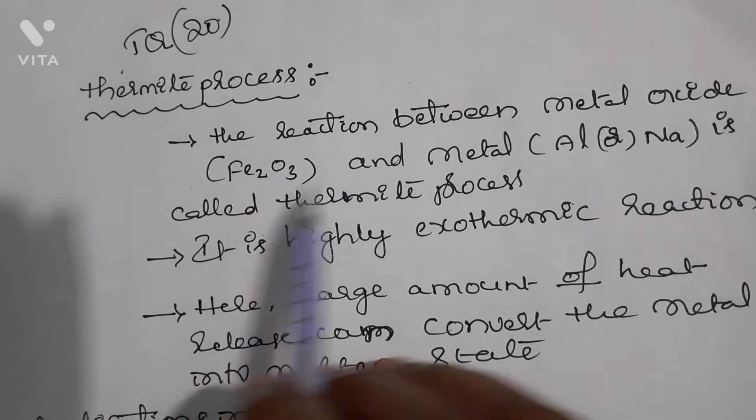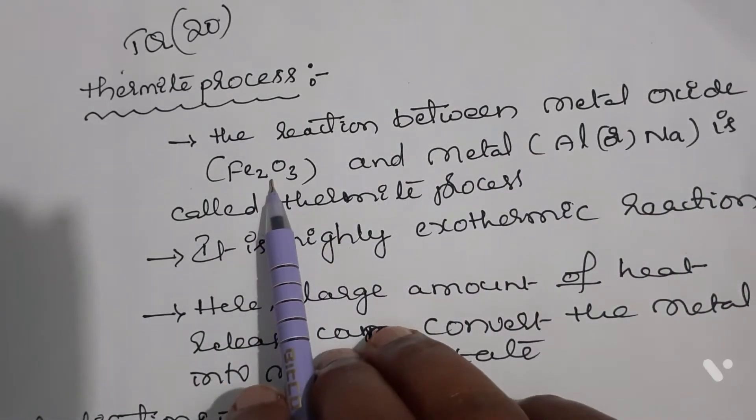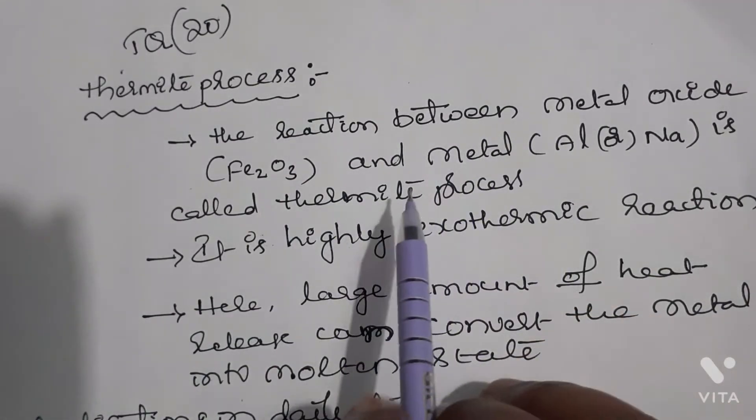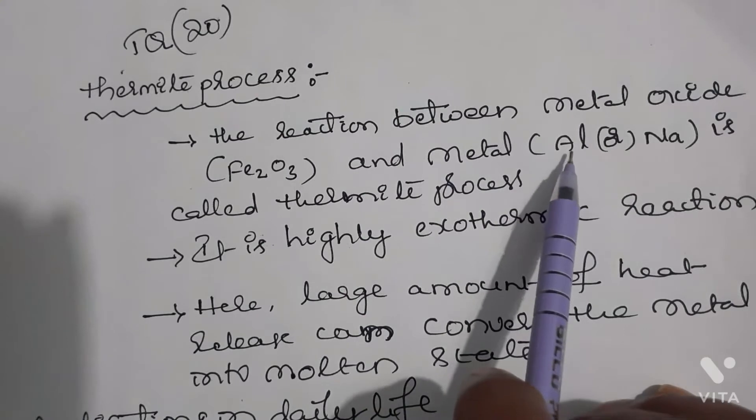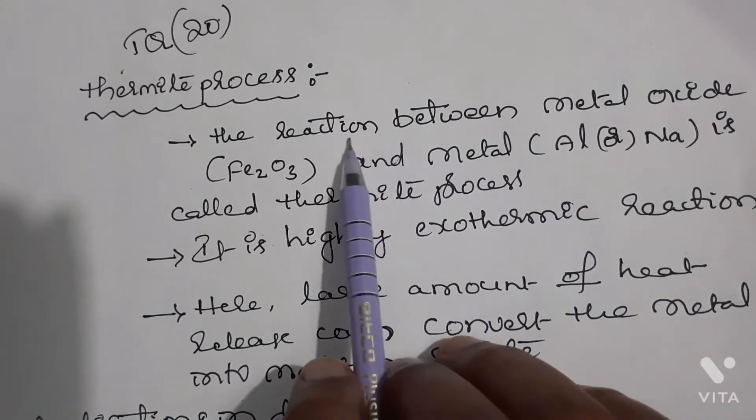What is a thermite process? The reaction between metal oxide, for example Fe2O3, and metal is called the thermite process. The metal can be aluminum or sodium. The reaction between metal oxide and metal is called the thermite process.